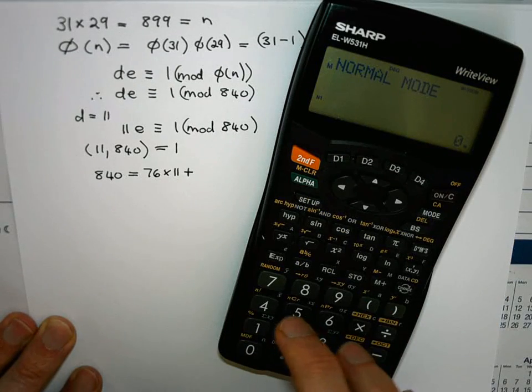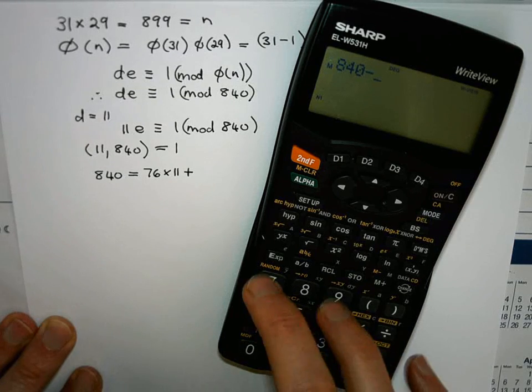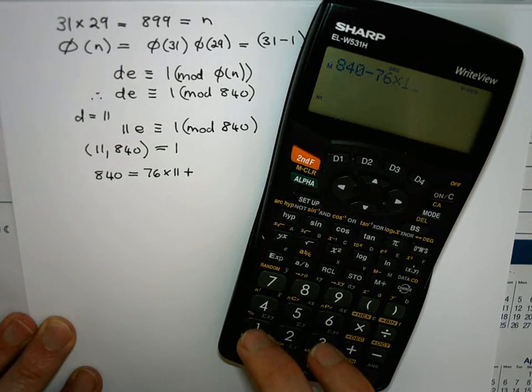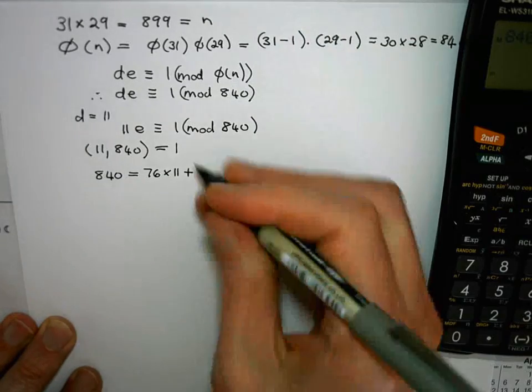So 76 times 11 and what is the remainder? So I say 840 minus 76 times 11 is equal to 4. Remainder of 4.